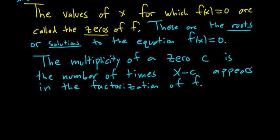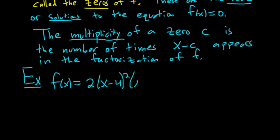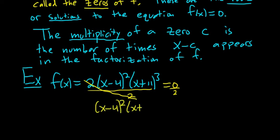Let's look at some examples where we find the multiplicity of zeros. Say we had f(x) equals 2(x-4)²(x+11)³. So this is a function. If you wanted to find the zeros, you would take this whole thing and set it equal to zero. Then you could just divide by 2, so the 2 goes away. You would get (x-4)²(x+11)³.